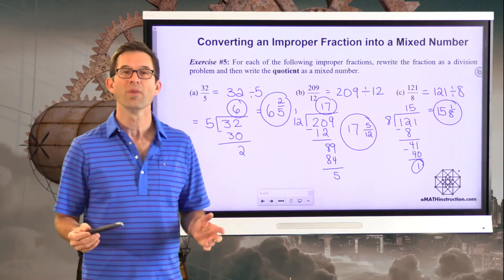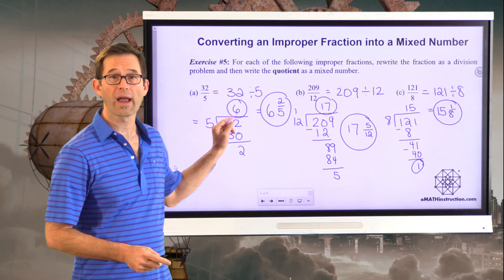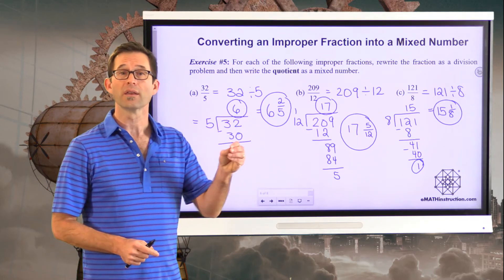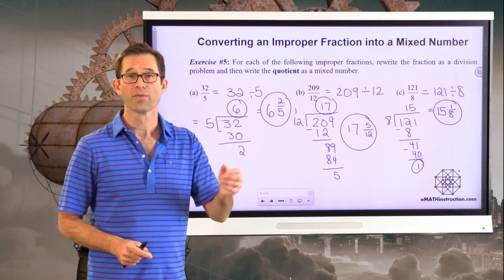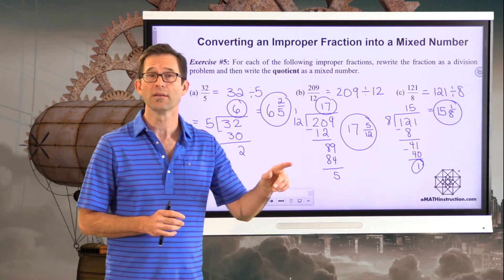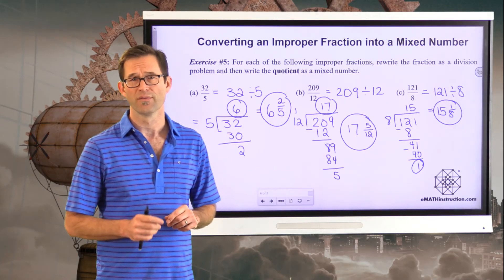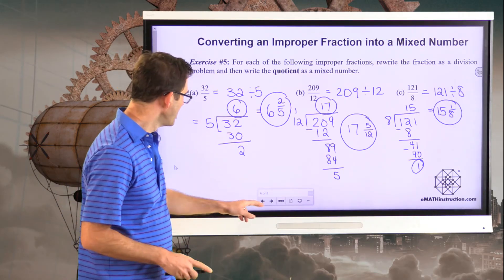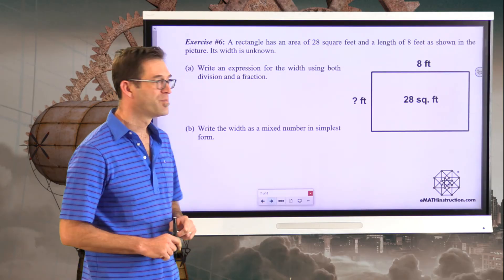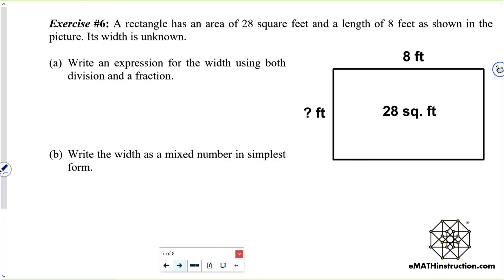We can use this equivalence between fractions and division to convert improper fractions into mixed numbers relatively quickly. Let's look at one last applied problem — exercise number six.